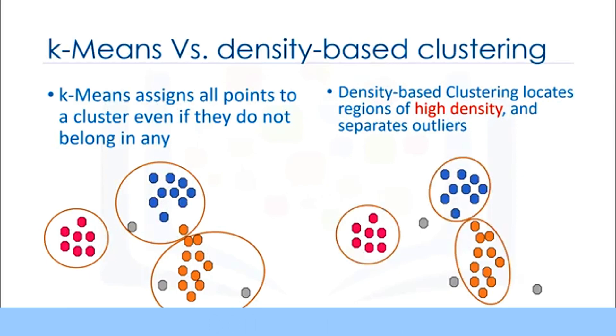In contrast, density-based clustering locates regions of high density that are separated from one another by regions of low density. Density in this context is defined as the number of points within a specified radius. A specific and very popular type of density-based clustering is DBSCAN.